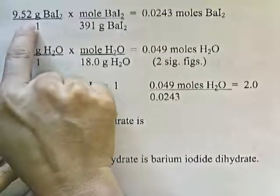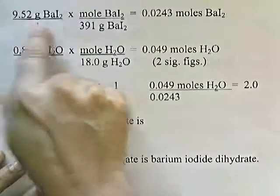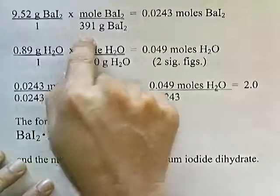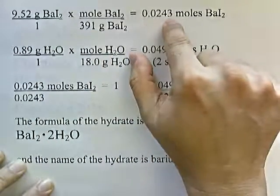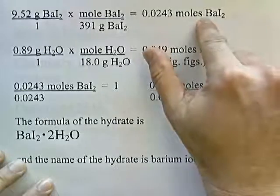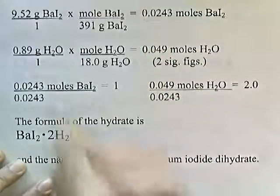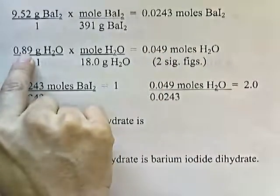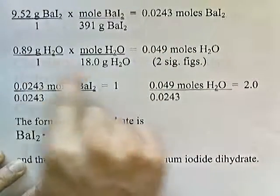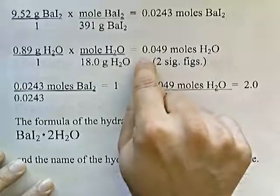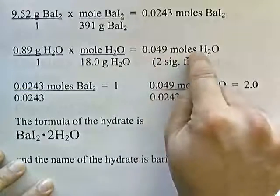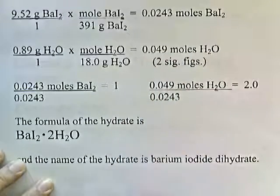9.52 grams of barium iodide divided by 391 gives us 0.0243 moles of barium iodide. And then 0.89 grams of water divided by 18 grams of water gives 0.049 moles of water.